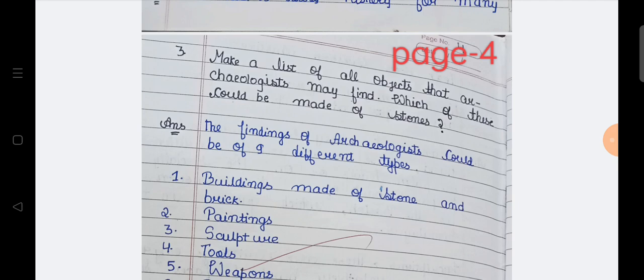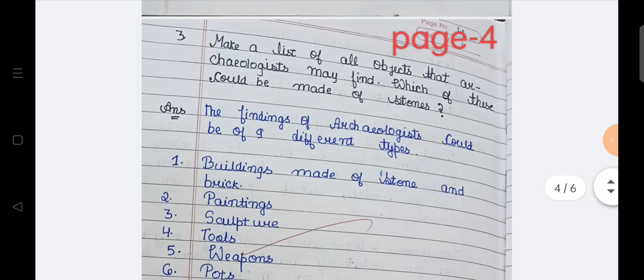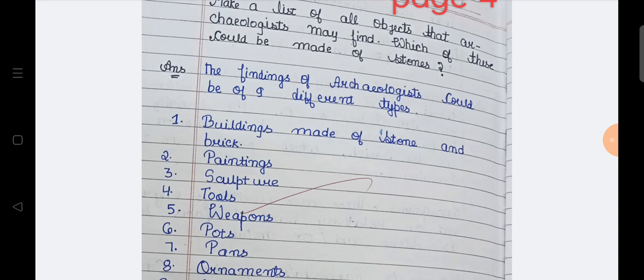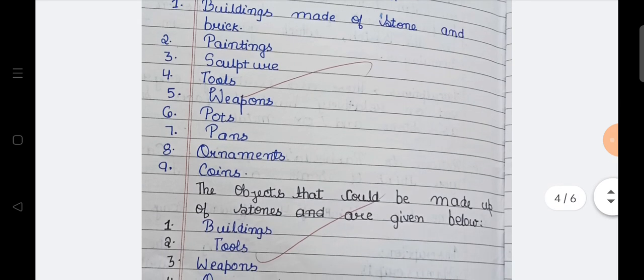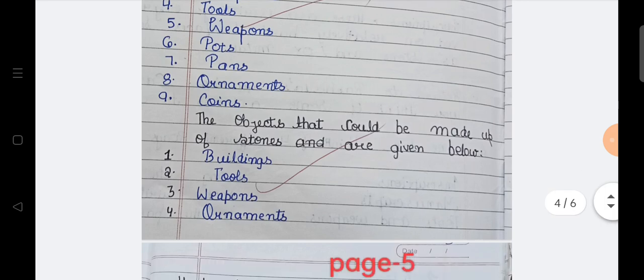Third question is, make a list of all objects archaeologists may find, which of these could be made of stones. The findings of archaeologists could be of nine different types. First is buildings made of stone and bricks. Second is paintings, third sculpture, fourth tools like tools to dig, fifth is weapons, six pots, seventh pans, eight ornaments, nine coins.